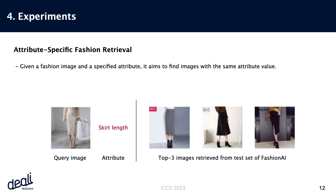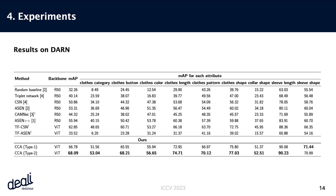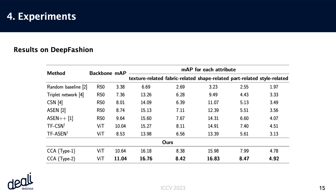In this task, given a fashion image and a specified attribute, the model finds images with matching attribute values. In the Fashion AI dataset, it's evident that the two CCA entries at the bottom exhibit significantly improved performance compared to existing models. In the Darn dataset, our model also outperformed all others across every attribute. The same holds true for our results on Deep Fashion.